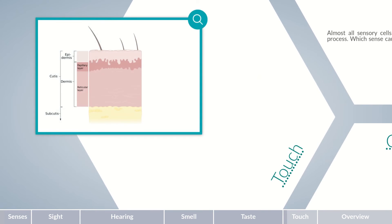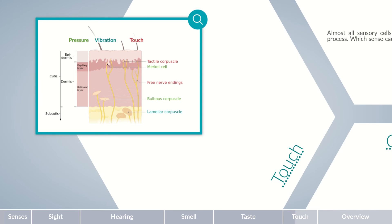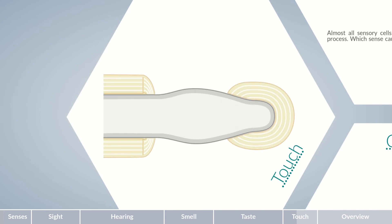The sensation of touch detects mechanical forces impacting the skin. Pressure is perceived by Merkel cells and bulbous corpuscles, vibrations through lamellar corpuscles, and touch by tactile corpuscles and free nerve endings. These sensory cells are distributed unevenly throughout the body, especially on the fingertips, tongue, and in the mouth. Signal transduction of individual tactile cells remains a research focus, so we'll focus on the fundamentals.